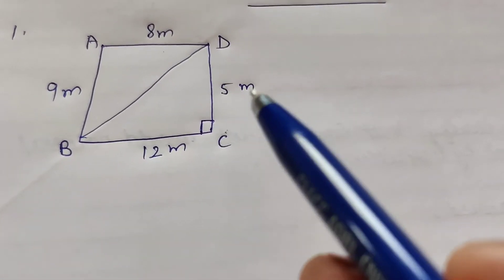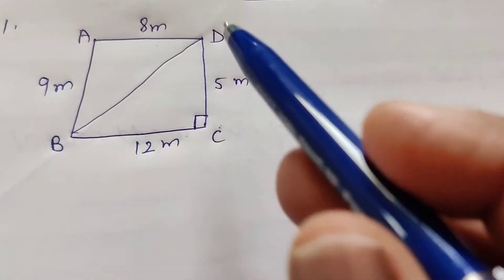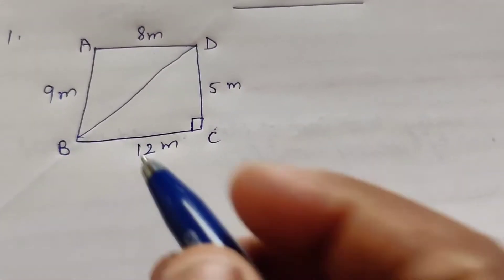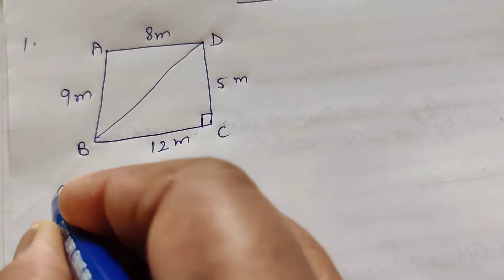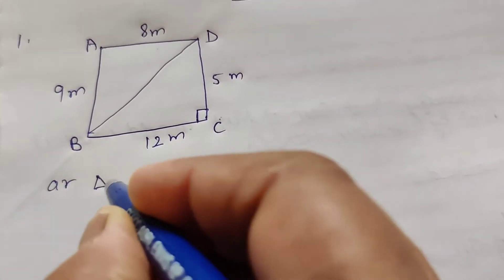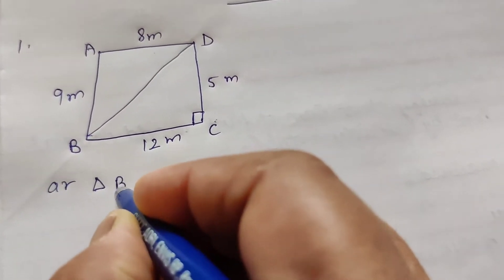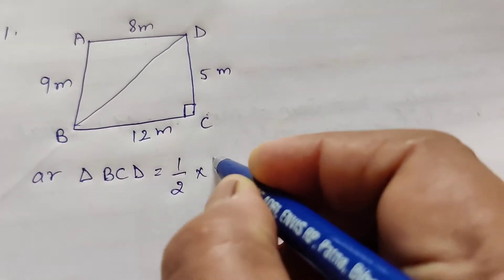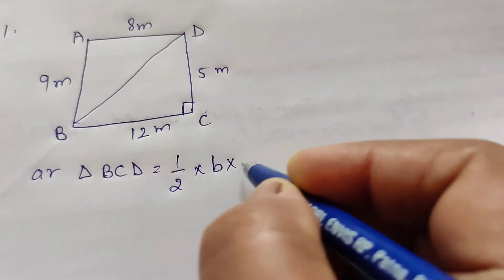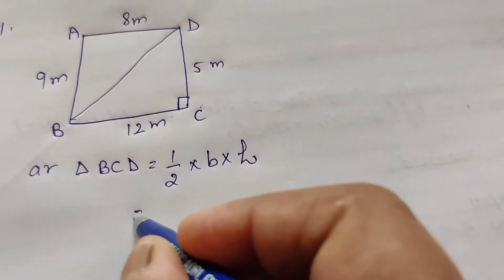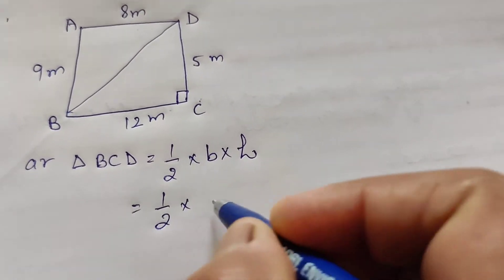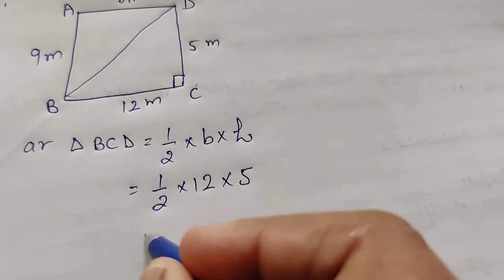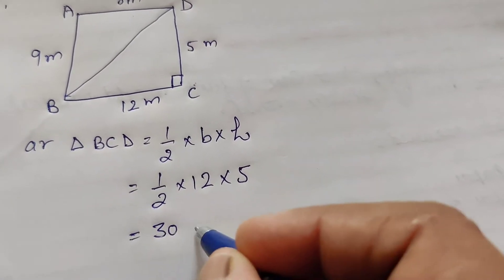The area of BCD is a right angle triangle. Therefore, area of triangle BCD equals half into base into height: 1 by 2 into 12 into 5, which gives 30 meter square.